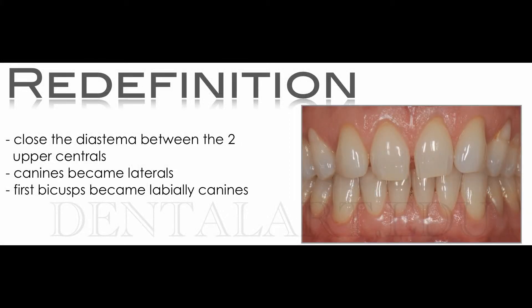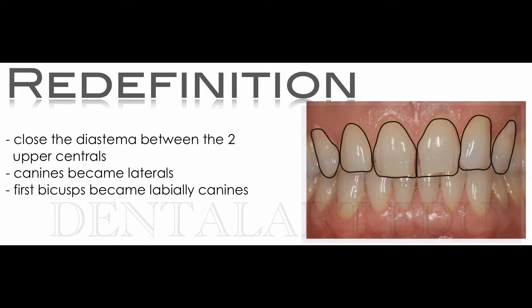We had a patient show up in the dental office who wanted to have a redefinition of his smile, and basically he wanted to close the diastema between the two upper centrals. The canines had to become laterals, and the first bicuspids became labial canines.